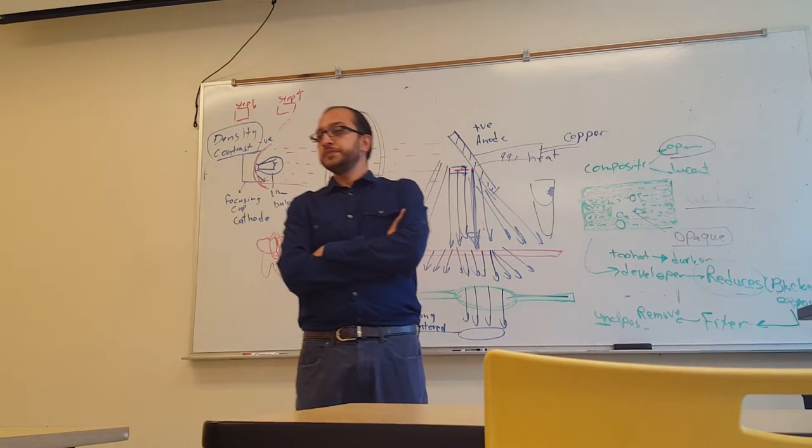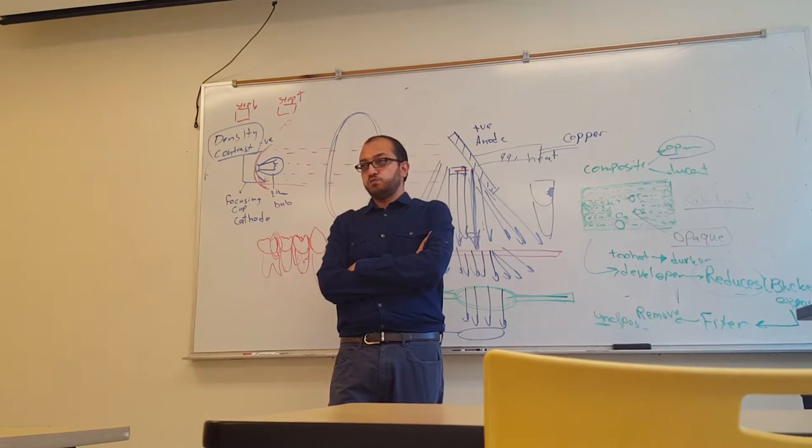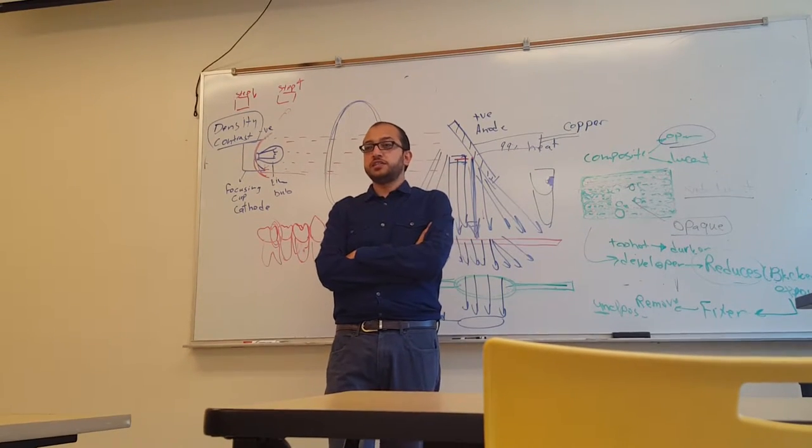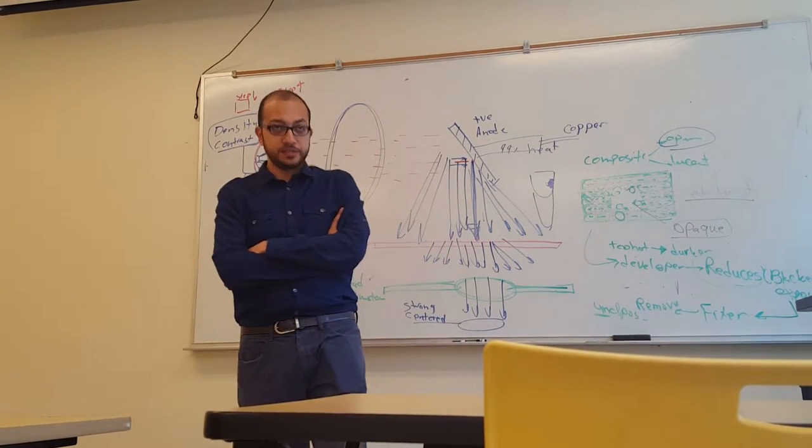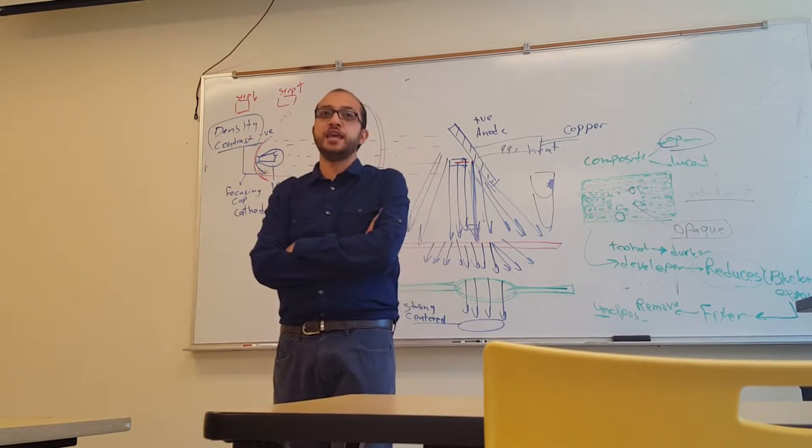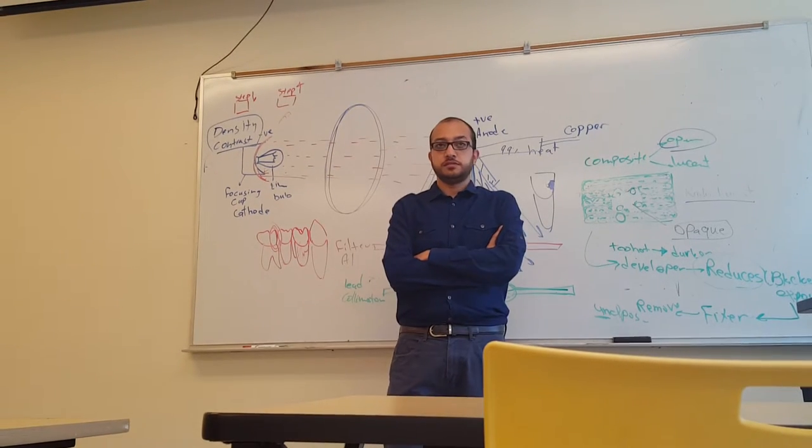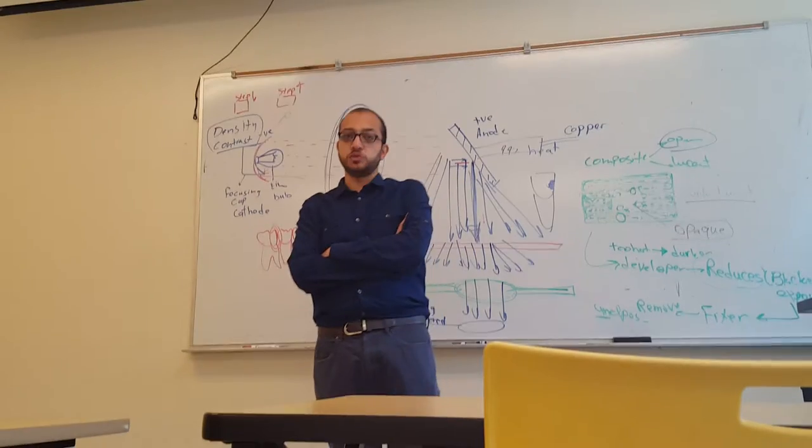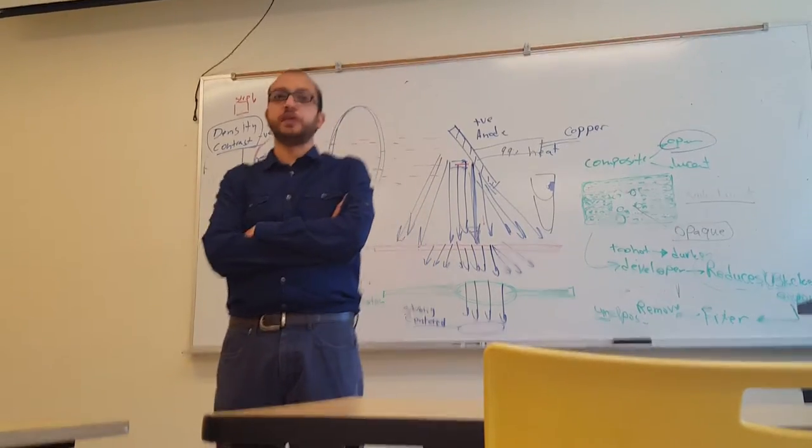Which of the following most directly affects radiographic contrast? Contrast is controlled by? KVP. KVP. MA is? Controlled by the density. Or density is controlled by MA. Yes.